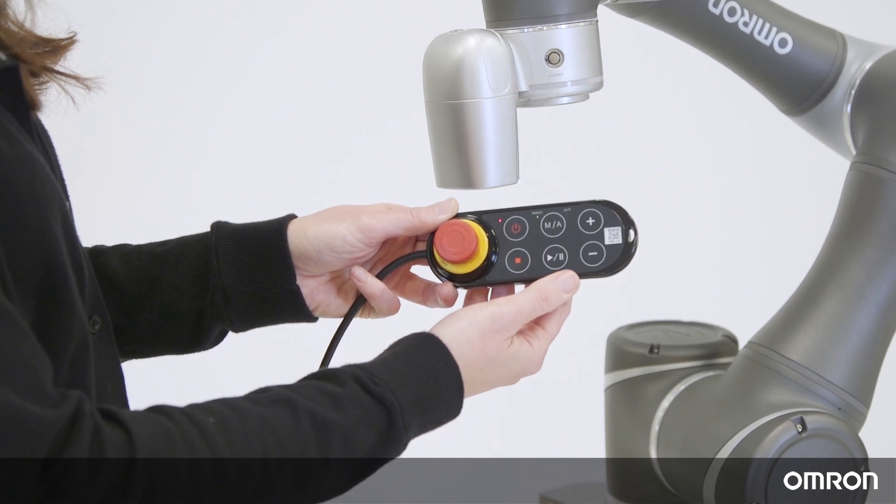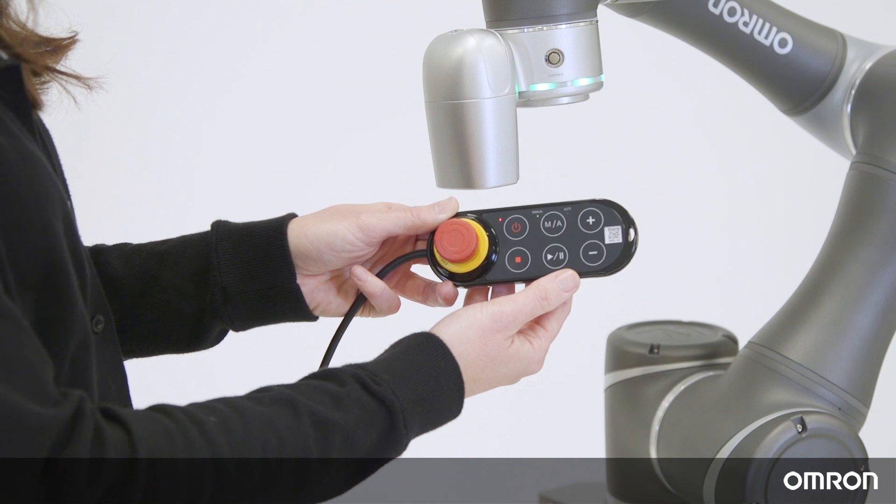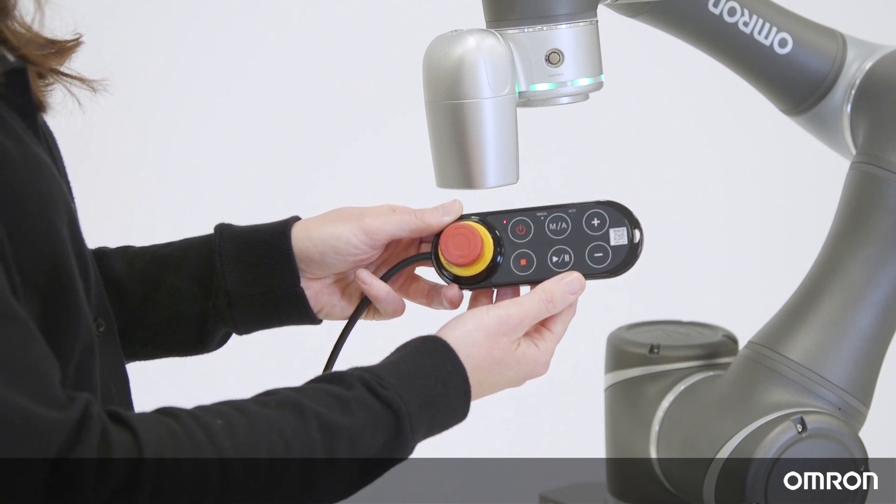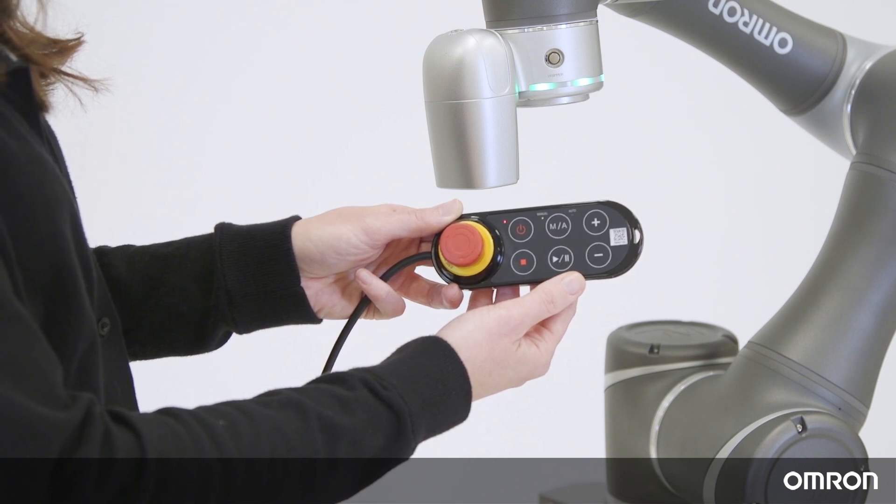Now you can start using the cobot again. However, it is important to note that by pressing the e-stop, the cobot has lost track of what it was doing, so it cannot go back to where it left off on its own. The cobot has to start from the beginning of the flowchart.